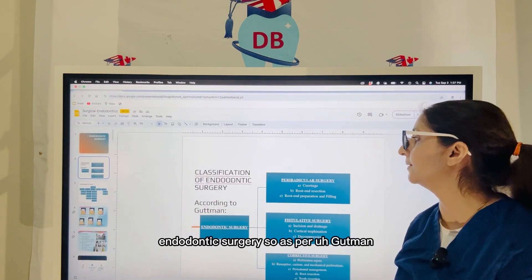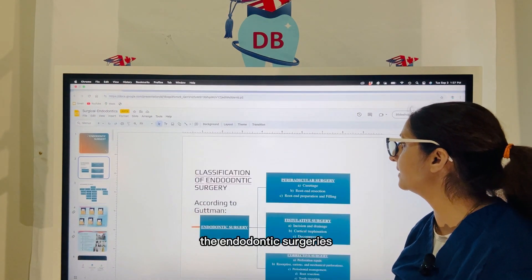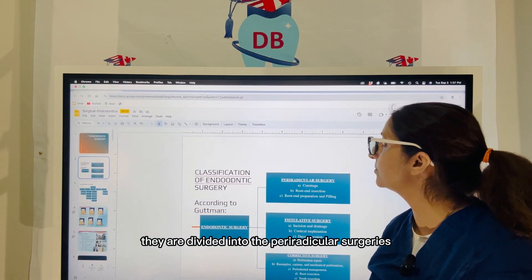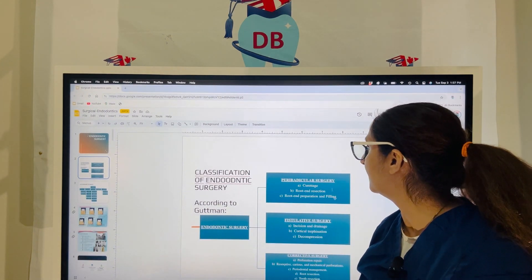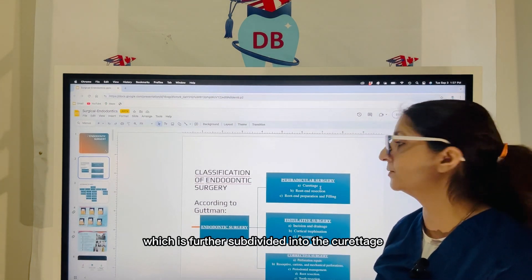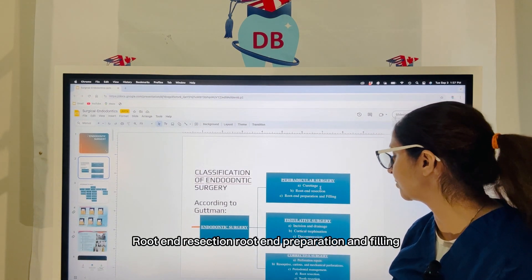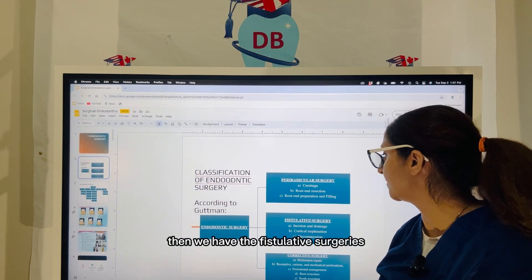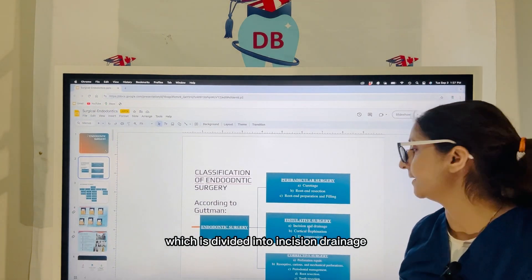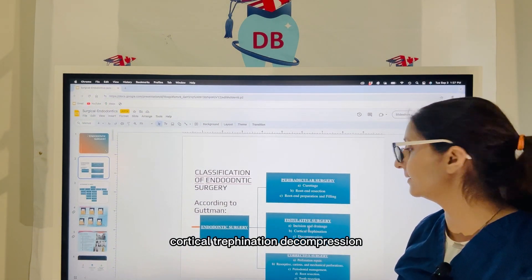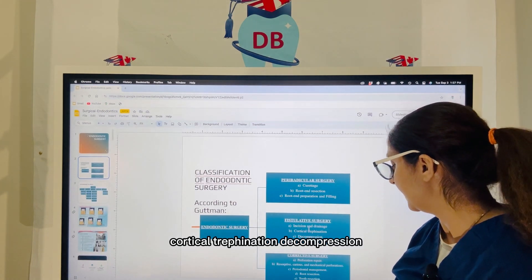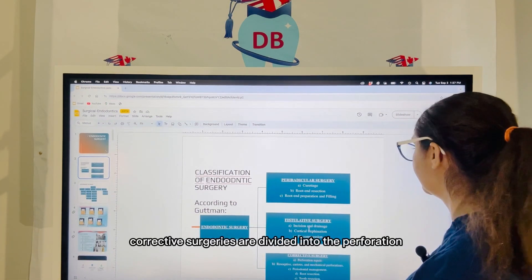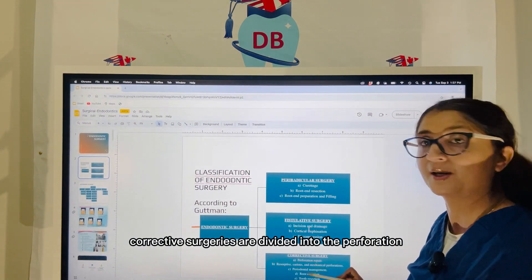As per Gutman, the endodontic surgeries are divided into the peri-radicular surgeries, which are further subdivided into curettage, root-end resection, root-end preparation and filling. Then we have the fistulative surgeries, which are divided into incision and drainage, cortical trephination, and decompression. And lastly, we have the corrective surgeries, which are divided into perforation repair.